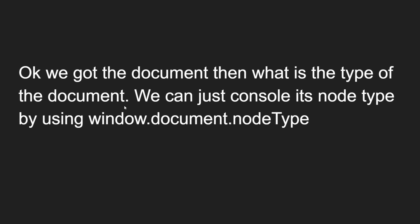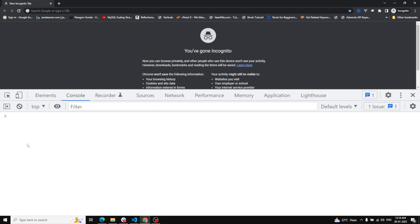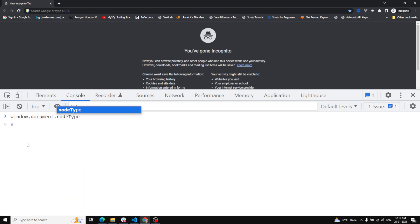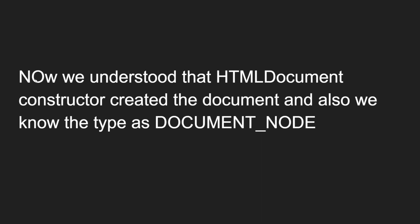Now, what is the node type of this document? We can check it using window.document.nodeType. If you try that, the result is 9. We have already seen node names and node types - 9 is the code for the Document node, which I've written here with a capital D.